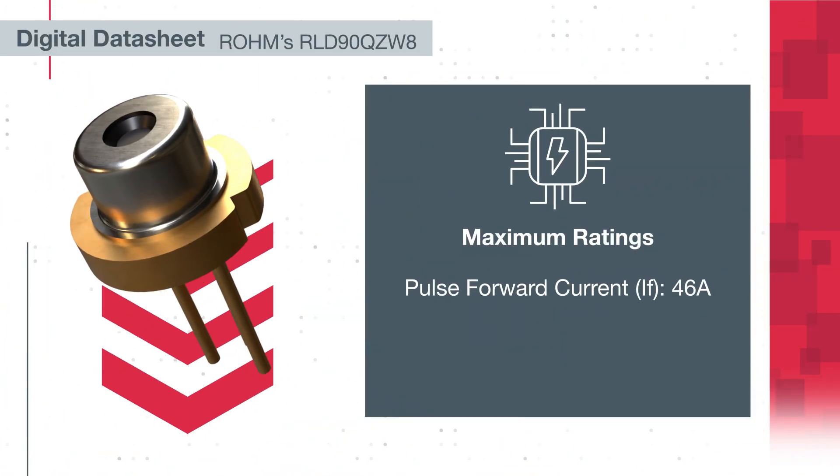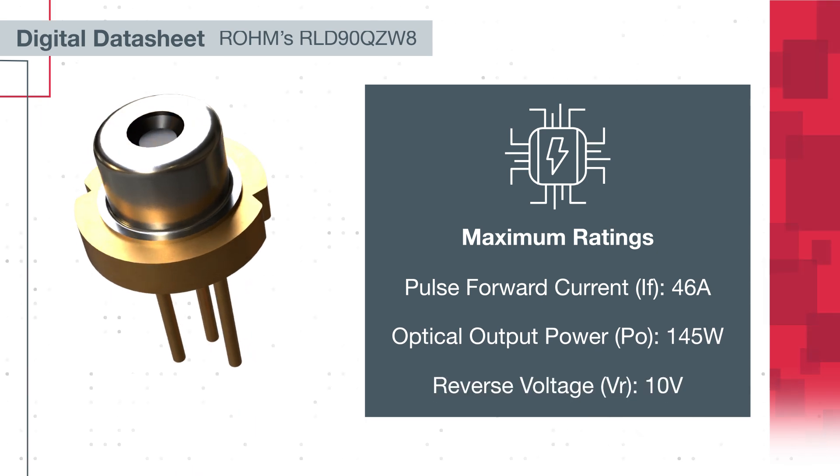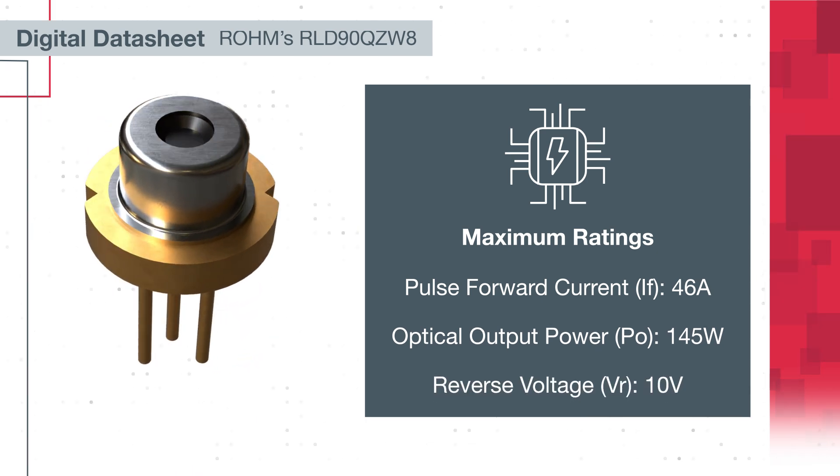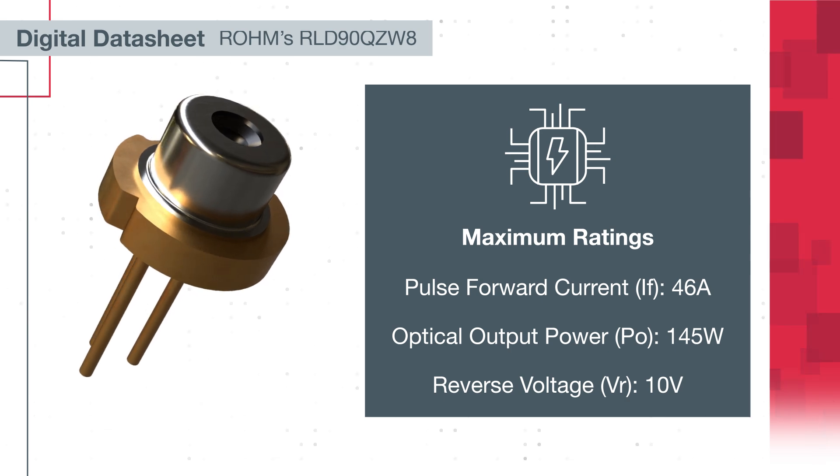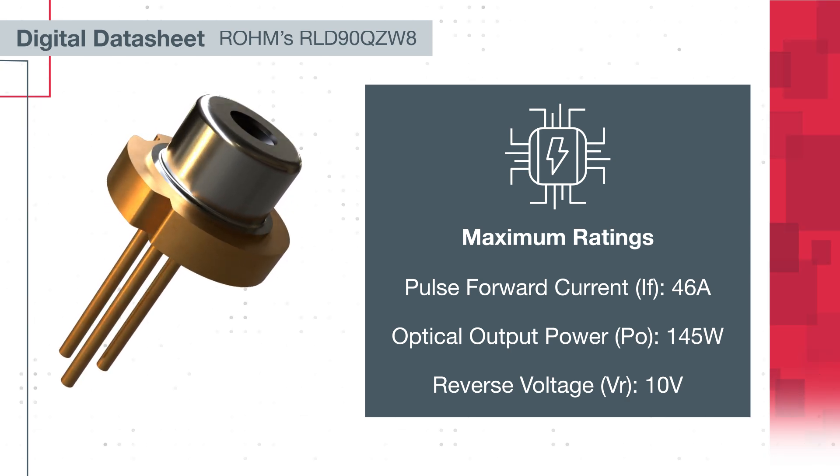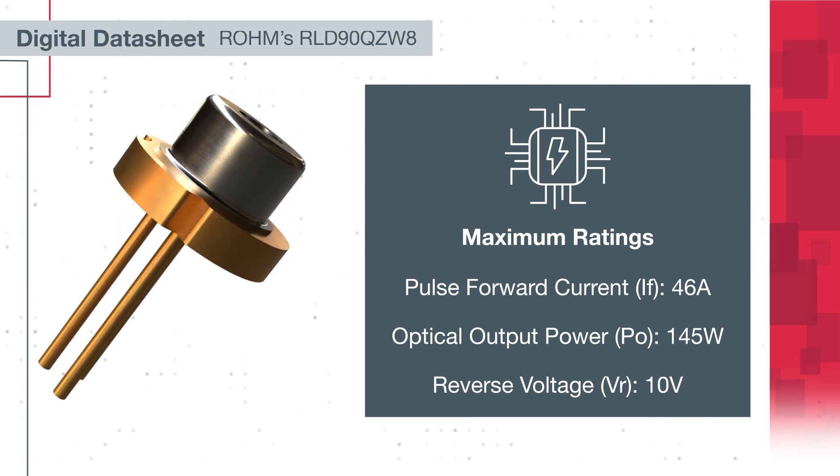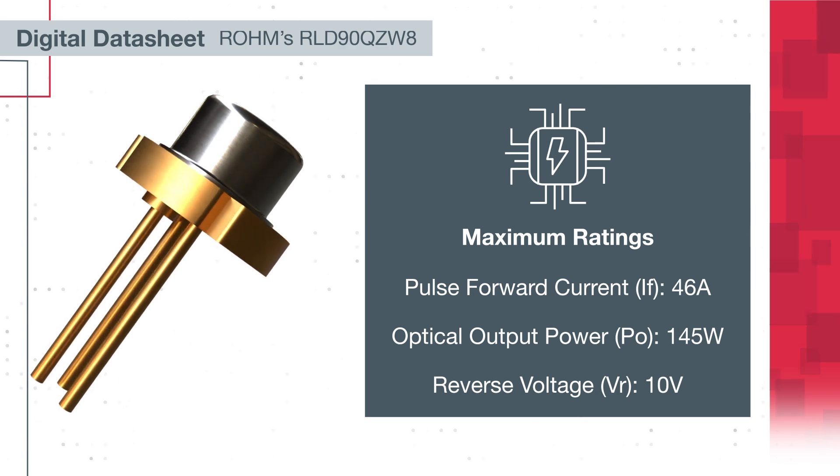The RLD90QZW800X laser diode operates with a max pulse-drive forward current of up to 46 amps, producing an optical output power of 145 watts, and it can withstand reverse voltages up to 10 volts.